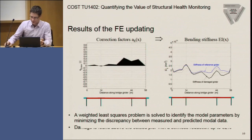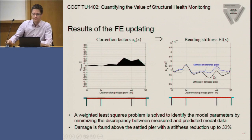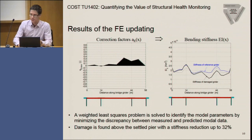Here we can see some results. On the right side, we see the bending stiffness that was updated in the reference state in blue and updated with the data from the damage state in black. From the difference between both, we can see the damage really happened in this area, and it was found that the stiffness reduction was up to 30% in this area.